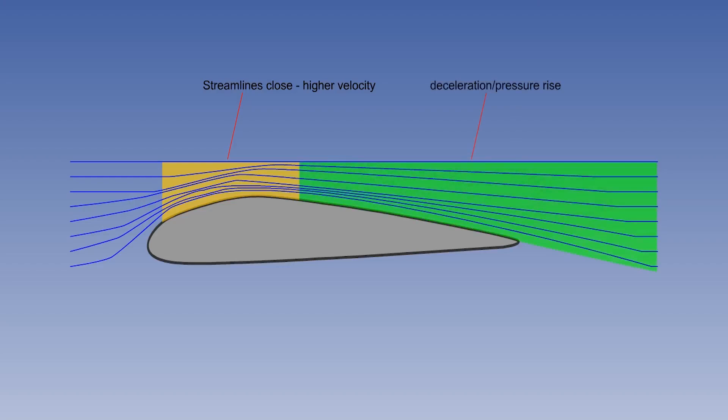When streamlines diverge, it indicates decelerating airflow and the associated rise in pressure. And converging lines indicate acceleration with decreasing pressure.